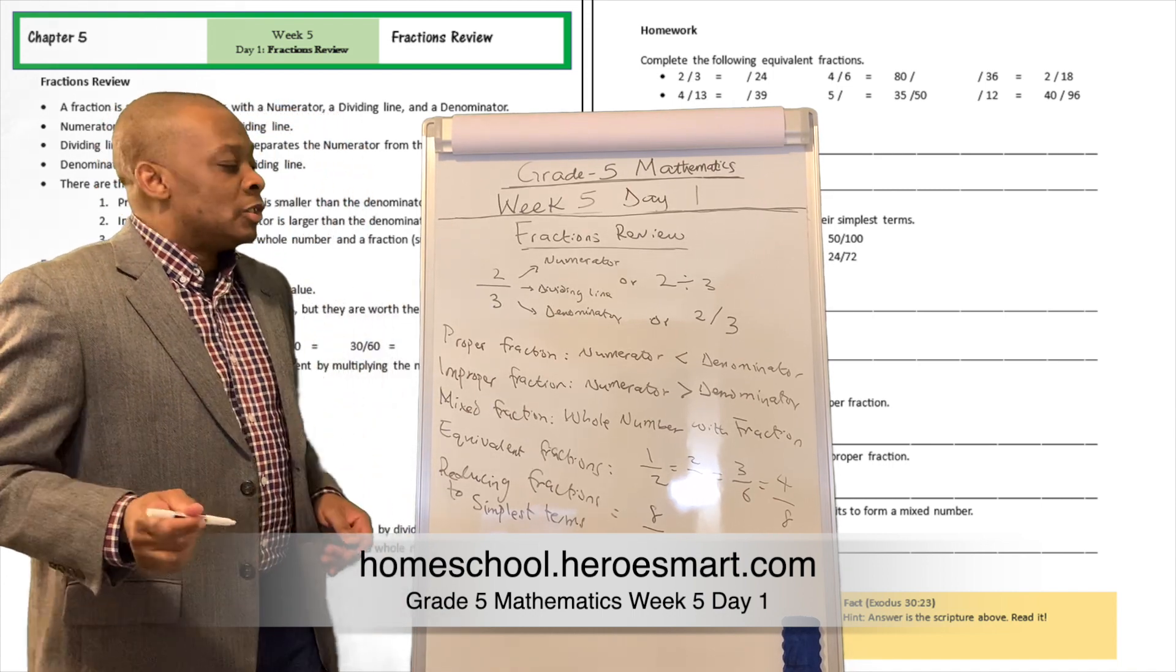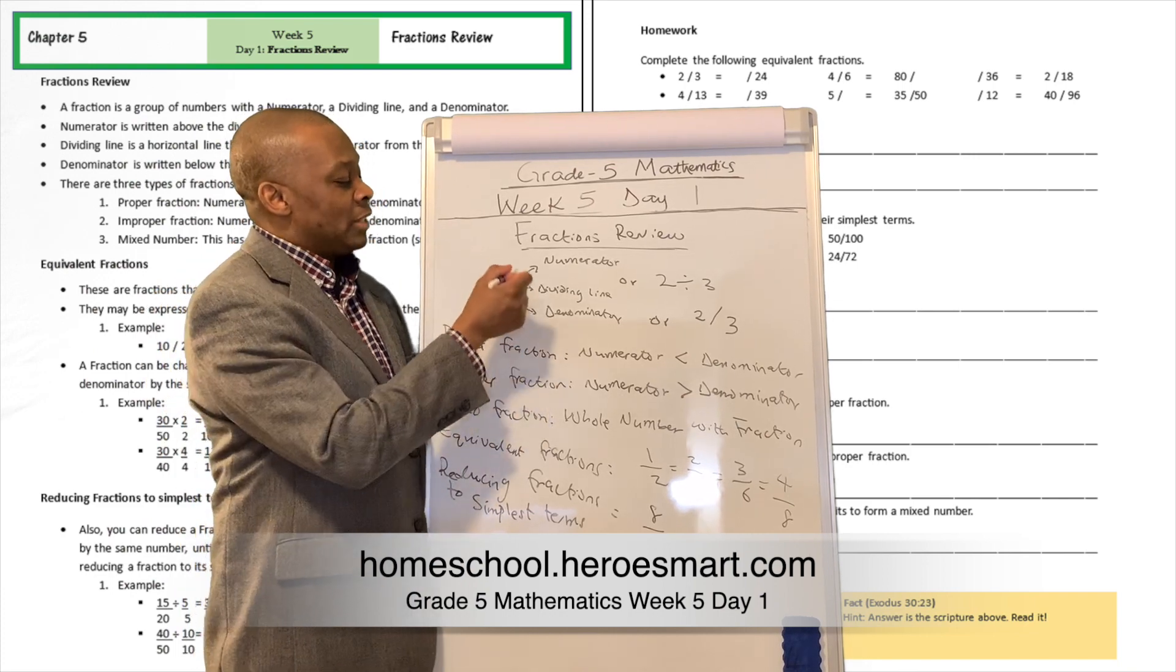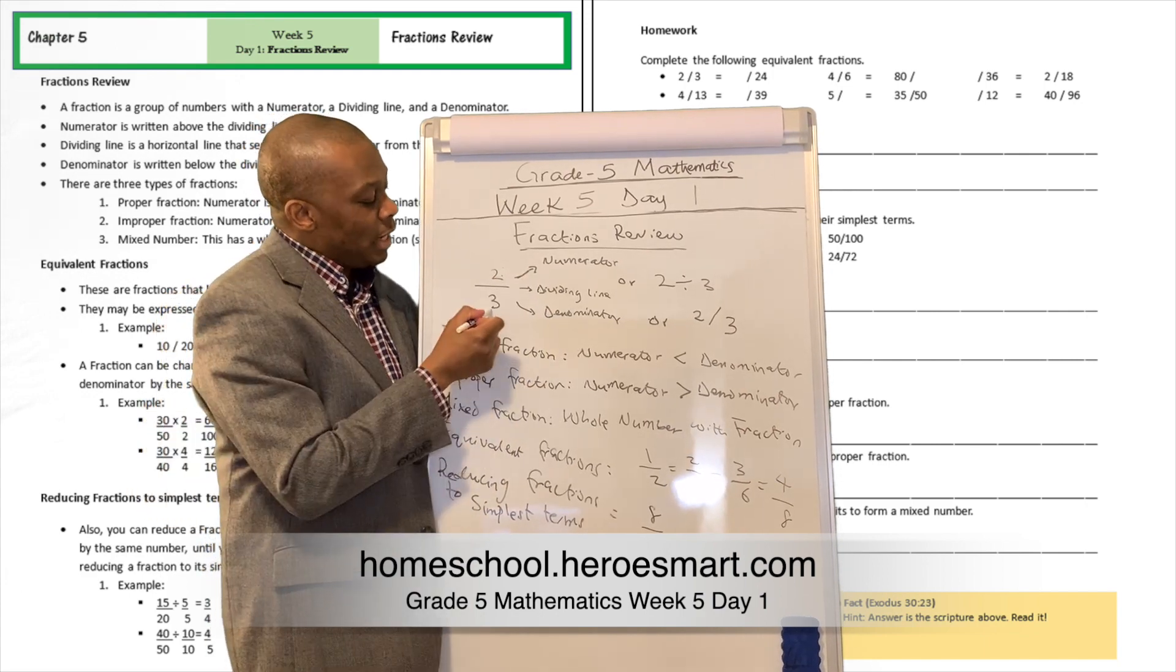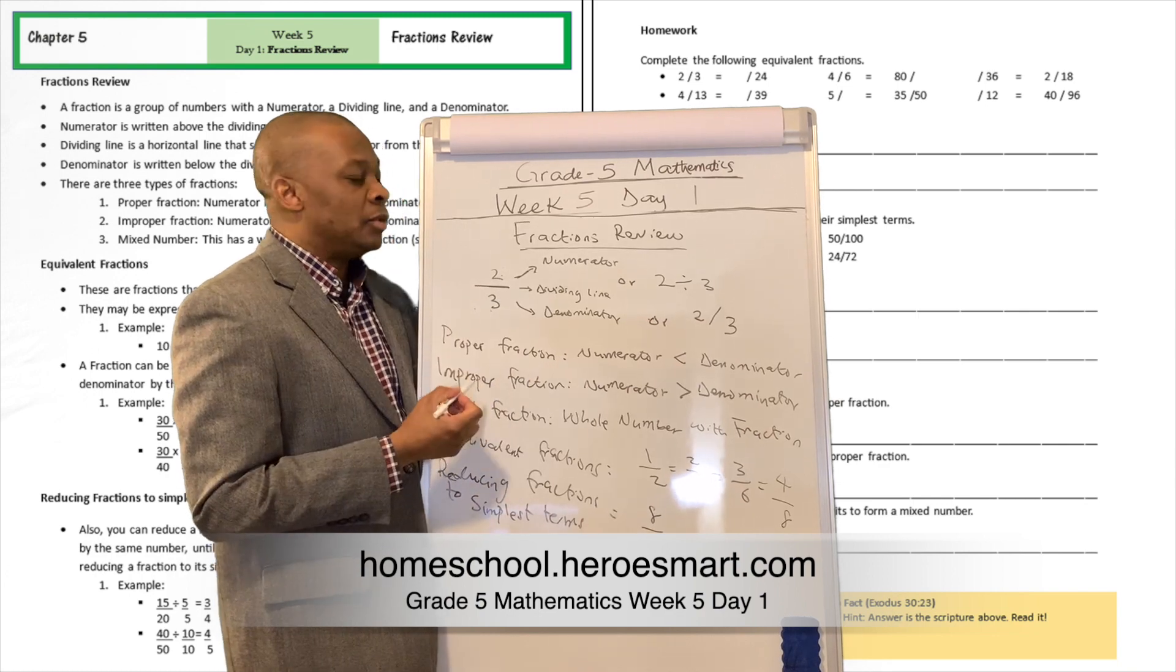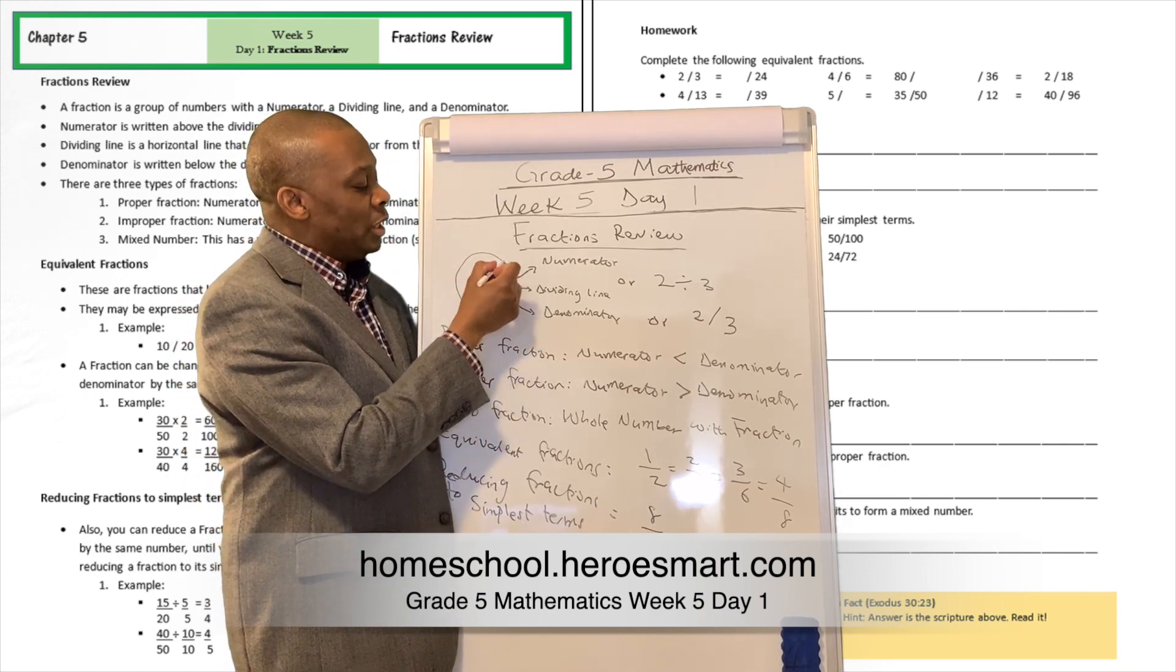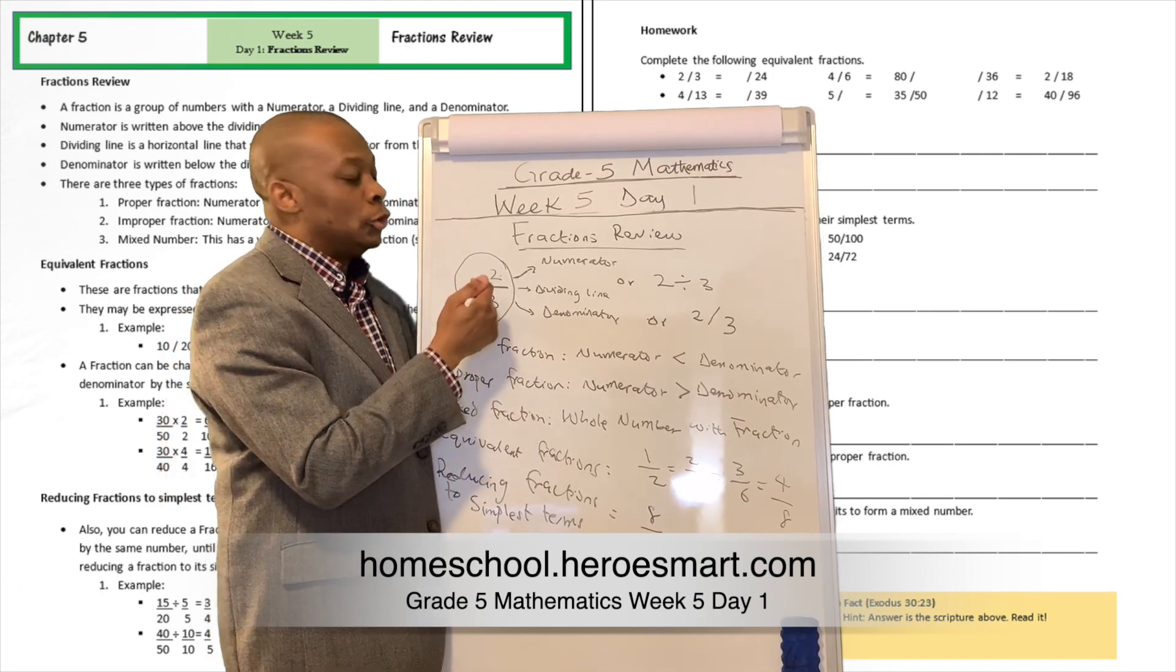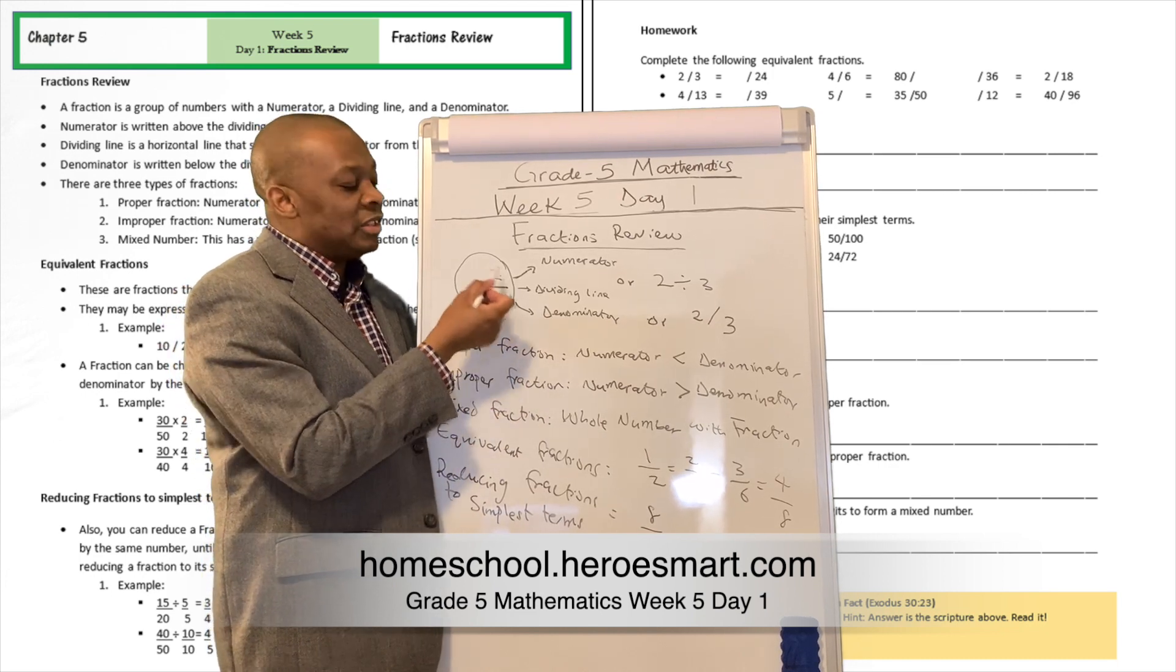So what is a fraction? A fraction is a group of numbers that has a numerator. So this two over here is going to be a numerator and a denominator and a dividing line. So in other words, if you have a number like this, two divided by three or two thirds, in some cases they are going to call it that, or two over three, two divided by three, two over three, that's a fraction.